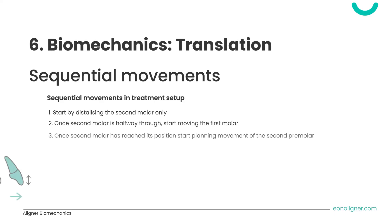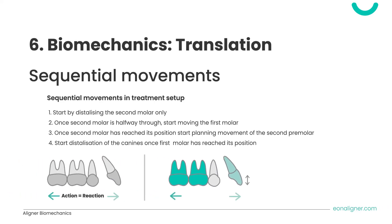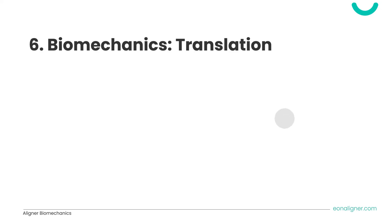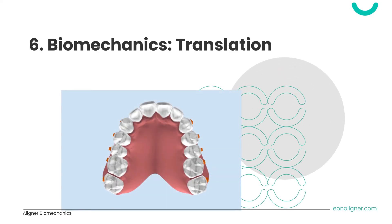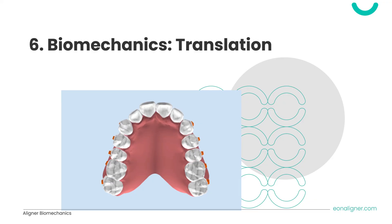How to plan sequential distalization: start by distalizing the second molar only. Once the second molar is halfway through, start moving the first molar. Once the second molar has reached its position, begin moving the second premolar. Start distalization of the canines once the first molar has reached its position. It is common to have an increased number of steps and longer treatment duration when planning sequential movements. A video demonstrates this sequential distalization process.